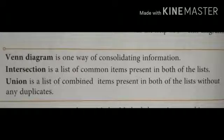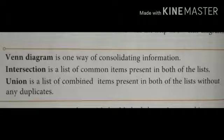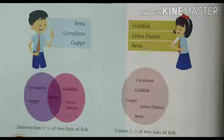First one is Venn diagram — it is one way of consolidating information. Number 2: Intersection — it is a list of common items present in both of the lists. Whereas union is a list of combined items present in both of the lists without any duplicates. To understand this more clearly, let's have a look at this chart.